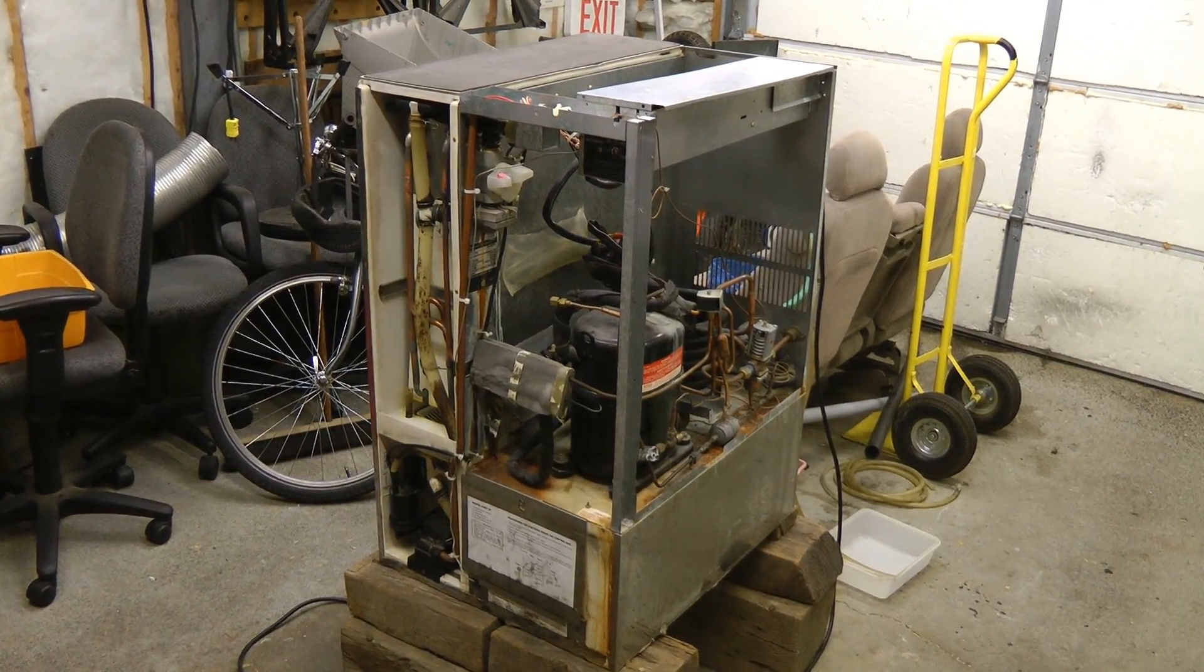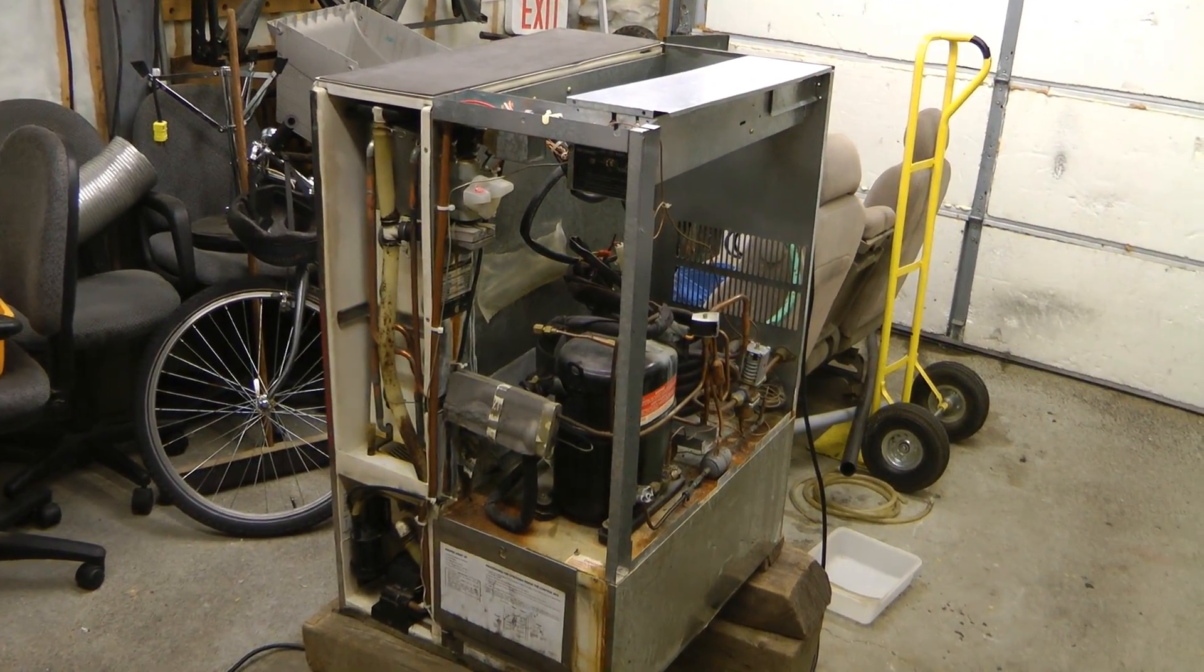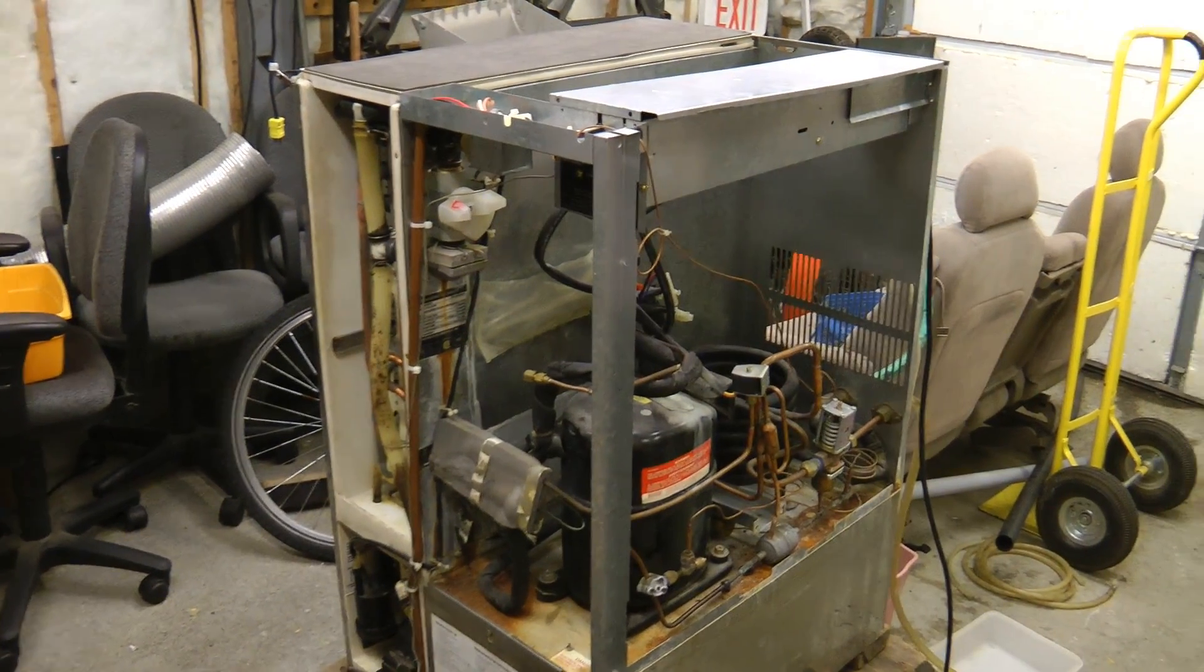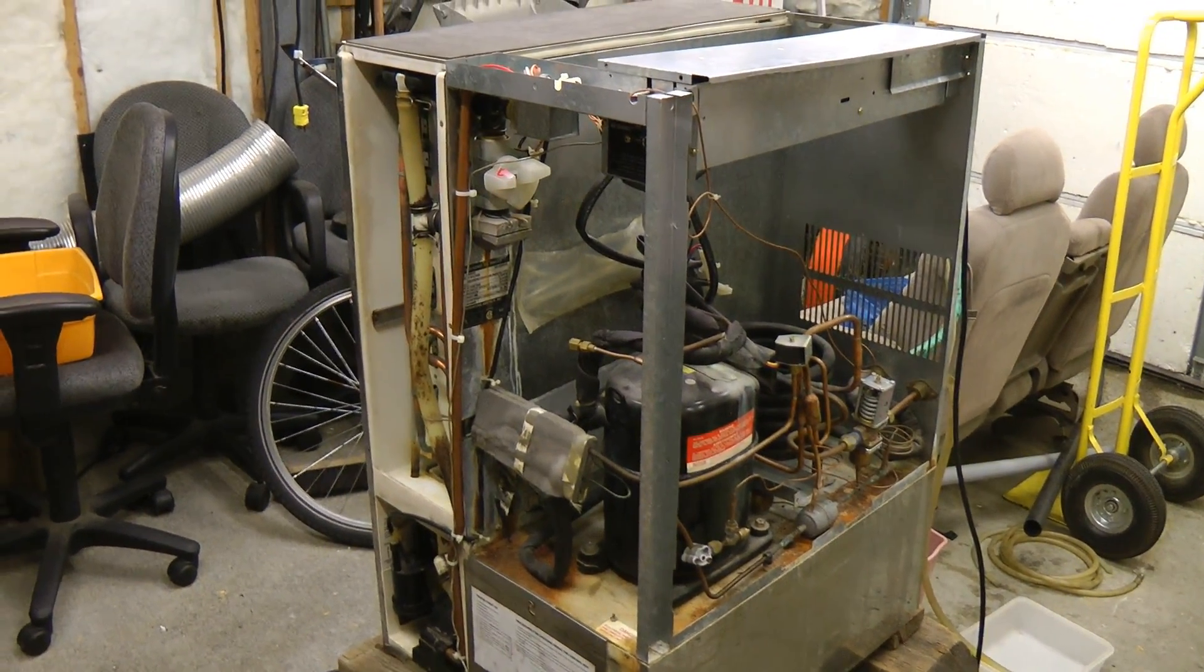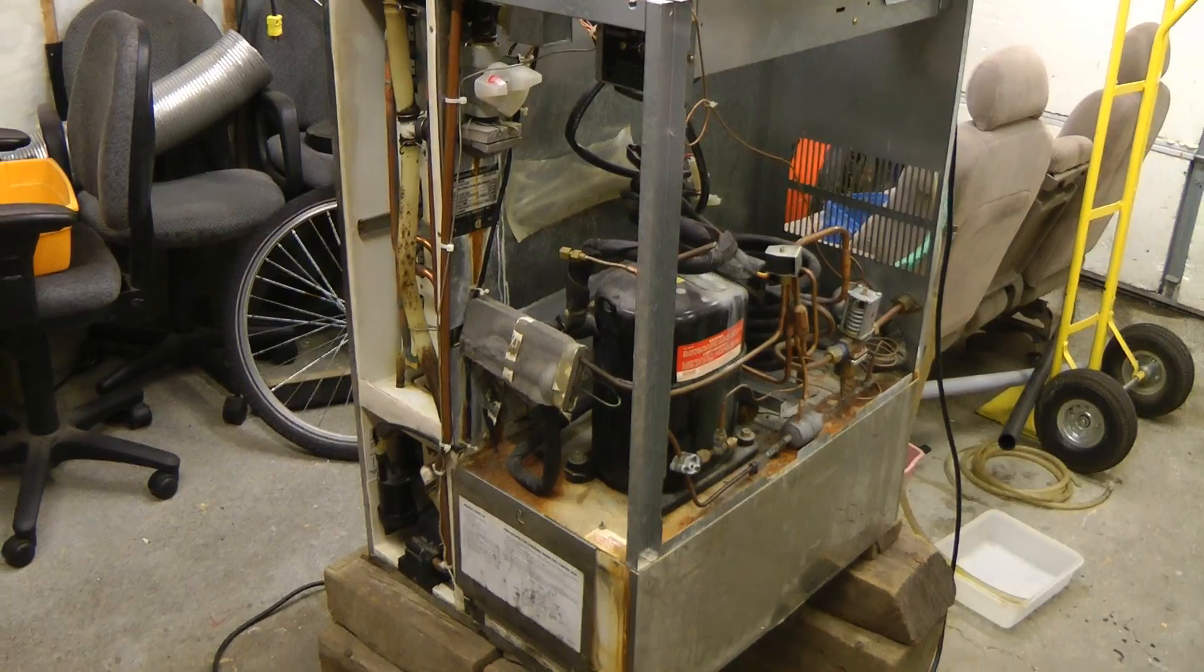Hey guys, this is a look at a Hoshizaki commercial ice maker. These are used in commercial kitchens. If you've ever had a drink at Professor Mugg's pub at BCIT, you might have had ice made by this machine.